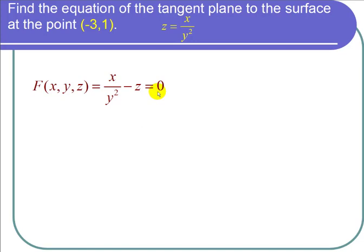The reason for doing this is that if we have a function of xyz equals zero, then the tangent plane at a point will have its normal vector parallel to the gradient of that function.